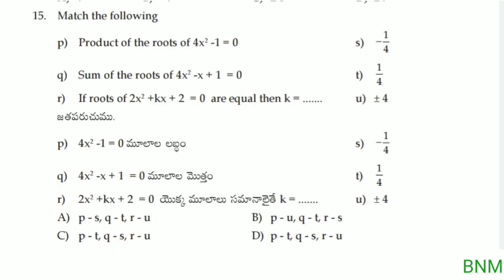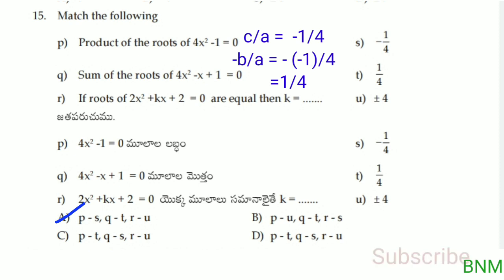Next — match the following. P: product of the roots of 4x squared minus 1 equals 0. Using the formula c by a: that is minus 1 by 4. Q: sum of the roots of 4x squared minus x plus 1 equals 0. Using minus b by a: minus (minus 1) by 4 equals 1 by 4. So P matches minus 1 by 4 and Q matches 1 by 4. That is the right answer.